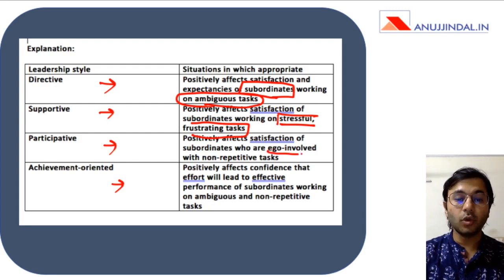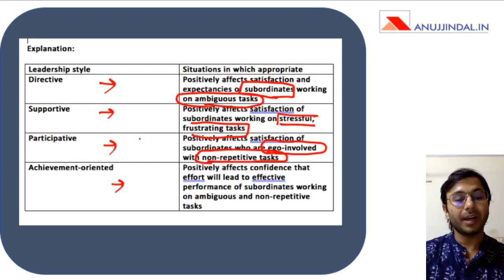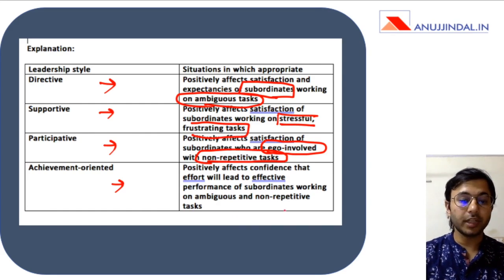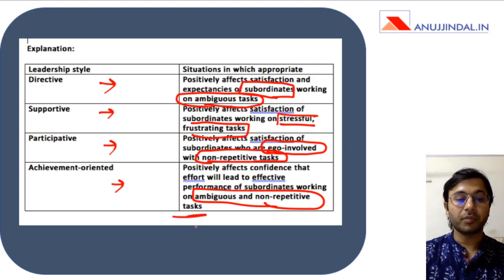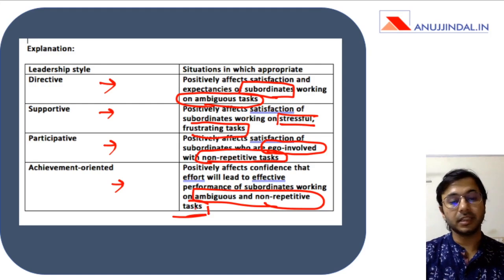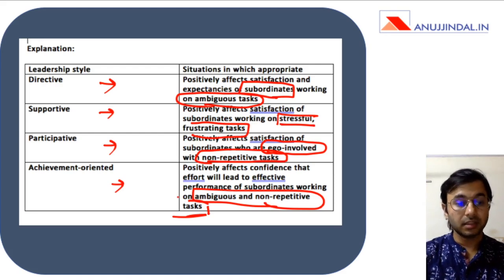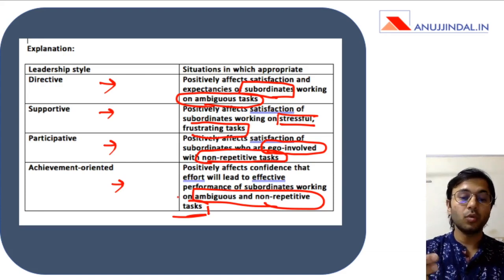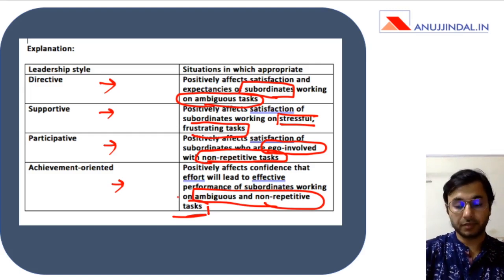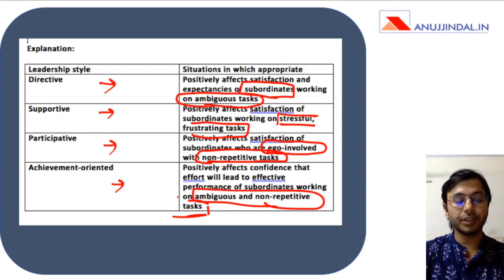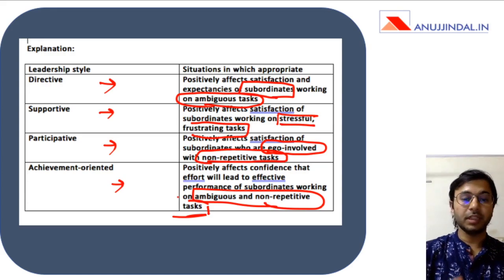The third is participative, where if ego is involved and if subordinates are doing non-repetitive tasks, you need to participate with them and fulfill their egos so they work effectively. The last is achievement-oriented, where you are dealing with ambiguous and non-repetitive tasks, but the subordinates are more educated and focused on achieving and learning something new — not just focused on the task at hand but also on the bigger picture of growth. The leader must provide a vision so they can fulfill those tasks more effectively. These styles are very psychological in nature, focusing more on the person than the task.